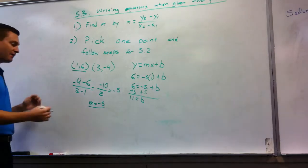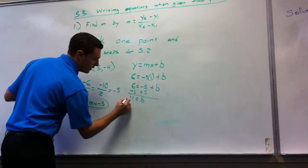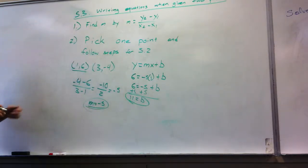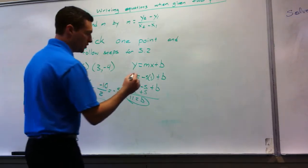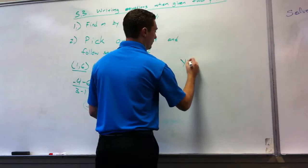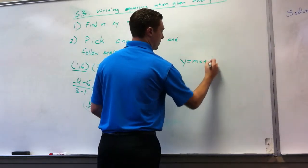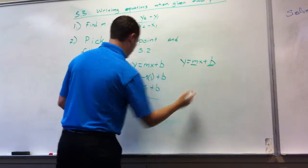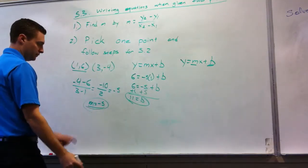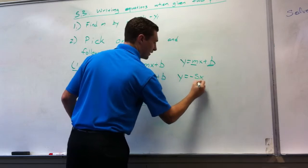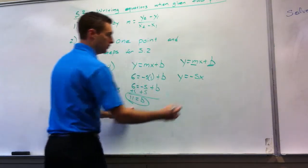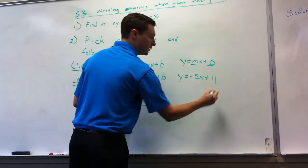Okay. So now I have m and now I have b. So what do I do? Fill that into your equation. So you're going to fill into y equals mx plus b again. But you're going to replace m and b with the values that you found. So we're going to say y equals negative 5x plus 11. Don't forget the x.